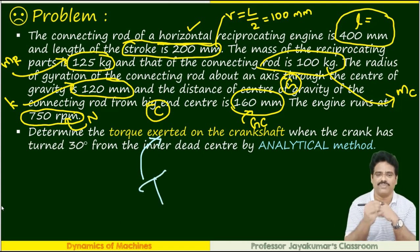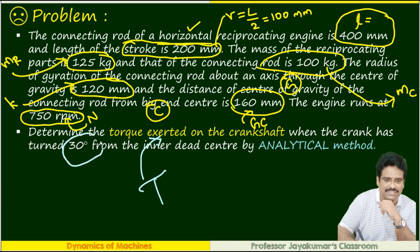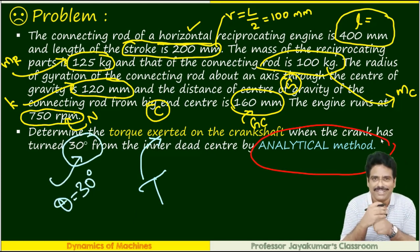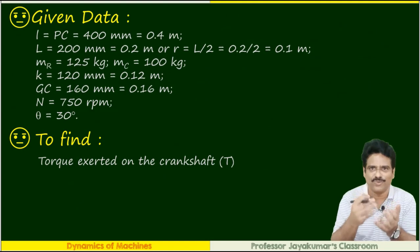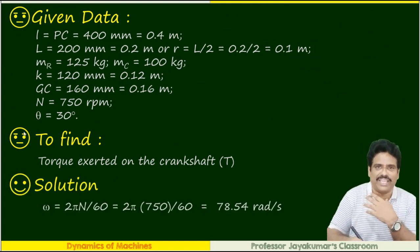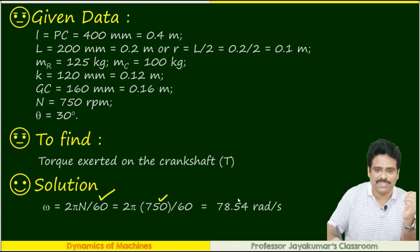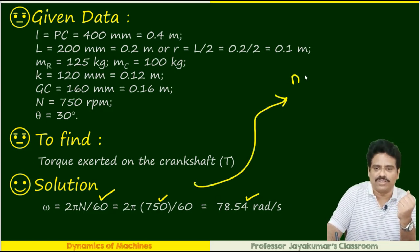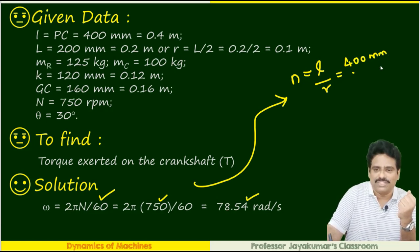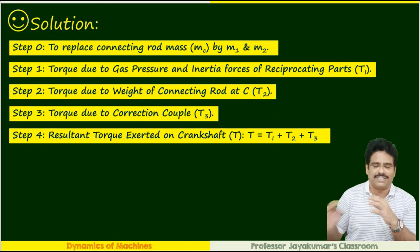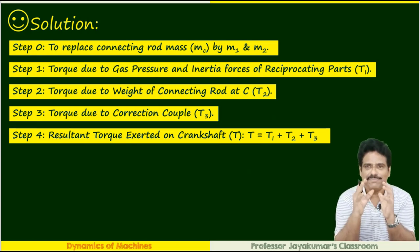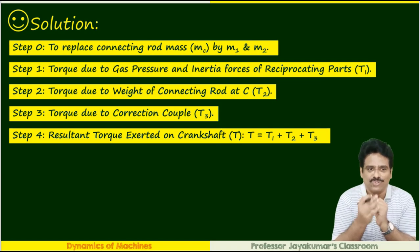We need to find the torque T when the crank has turned 30°. These are the given data. First, find ω = 2πN/60. Then find n = L/R = 400/100 = 4. We will apply a five-step procedure to solve this problem.